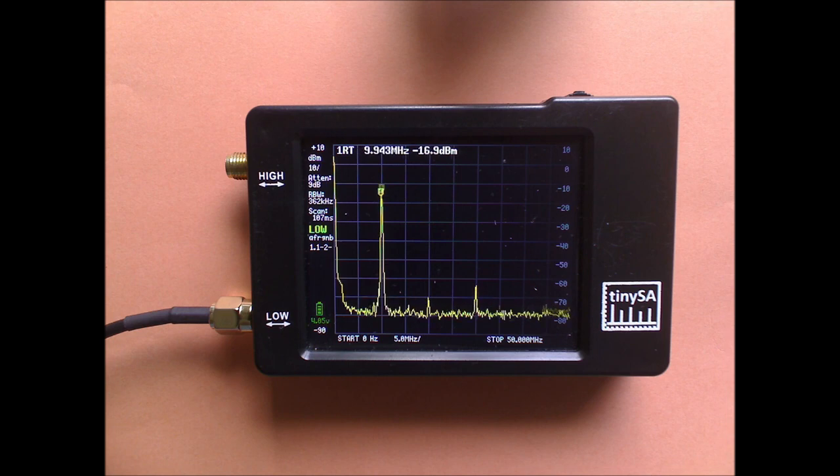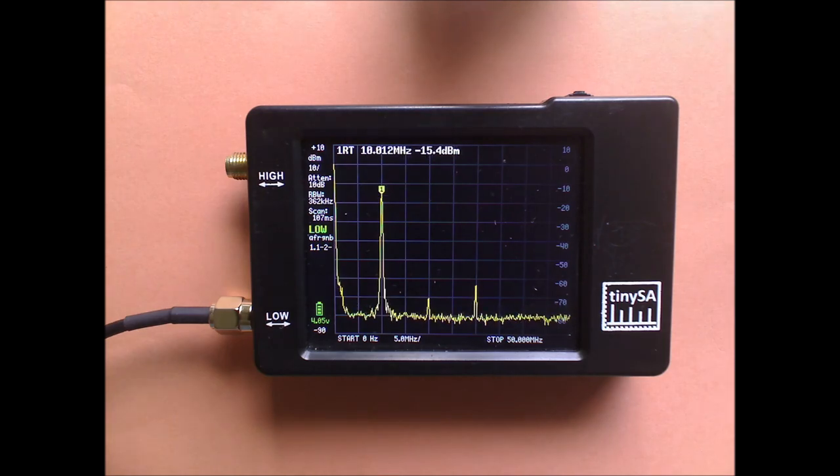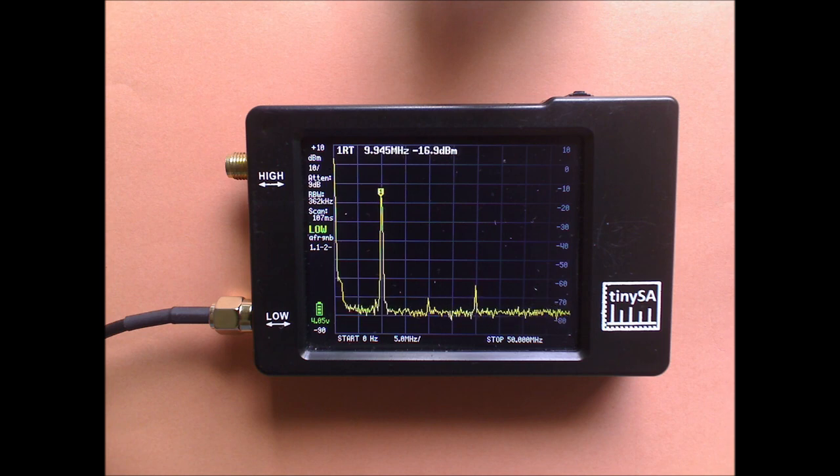the TinySA at some moment in time checks the level of the signal at 10 MHz, and that could be anywhere within the AM modulation cycle. So the AM modulation depth influences the measured level and is randomly sampled and that is why you see it wildly moving around.